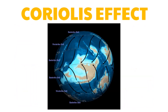Since the earth is roughly a sphere, the speed of its rotation is fastest at the equator and slowest at the poles. When air leaves the poles, its speed increases as it travels towards the equator. As a result, the air veers and it doesn't go straight — this is the Coriolis effect.